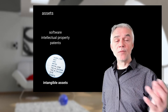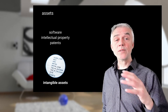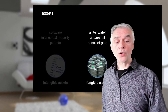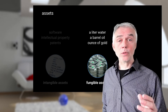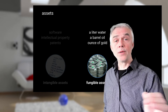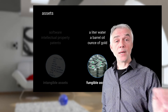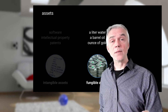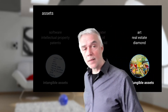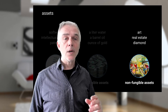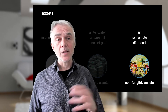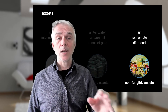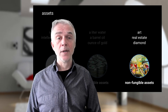A token represents an asset, and there are different types of assets. Intangible assets — like software, intellectual property, or patents — you cannot touch them but they are certainly assets. There are also fungible assets, like a liter of water or a glass of cola at the bar; it doesn't matter which specific cola you get, so it's fungible. And non-fungible assets are, for example, artworks or real estate — you cannot simply replace an artwork with another artwork or your house with a neighbor's house, because although they may look the same, they carry different value.